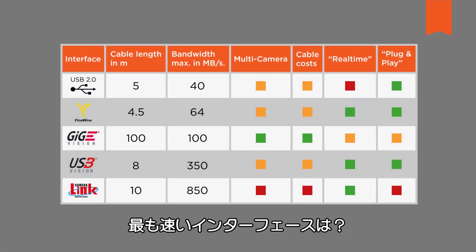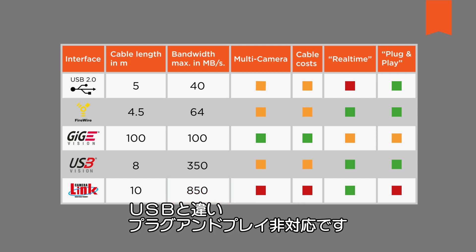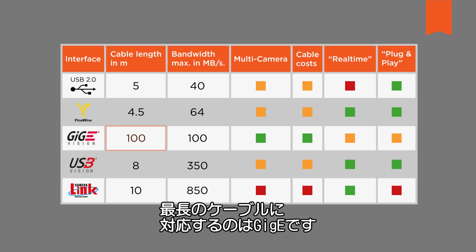Which interface is fastest? CameraLink has the highest bandwidth and as such can transfer data faster than the others. Unlike USB, however, it is not plug-and-play compatible. GigE supports the longest cable length.